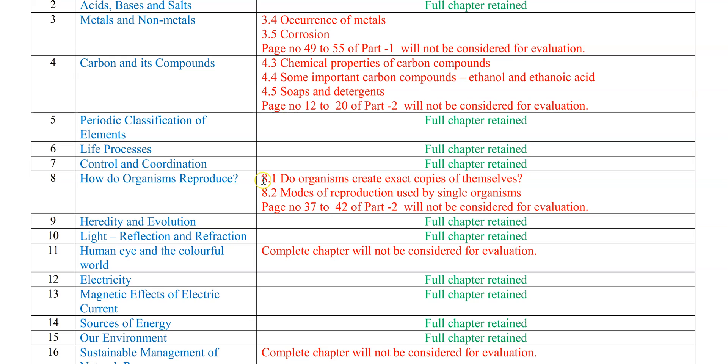That is, topic number 8.1 Do organisms create exact copies of themselves, and topic number 8.2 Modes of Reproduction used by single organisms. These two topics are deleted from your part 2 textbook.